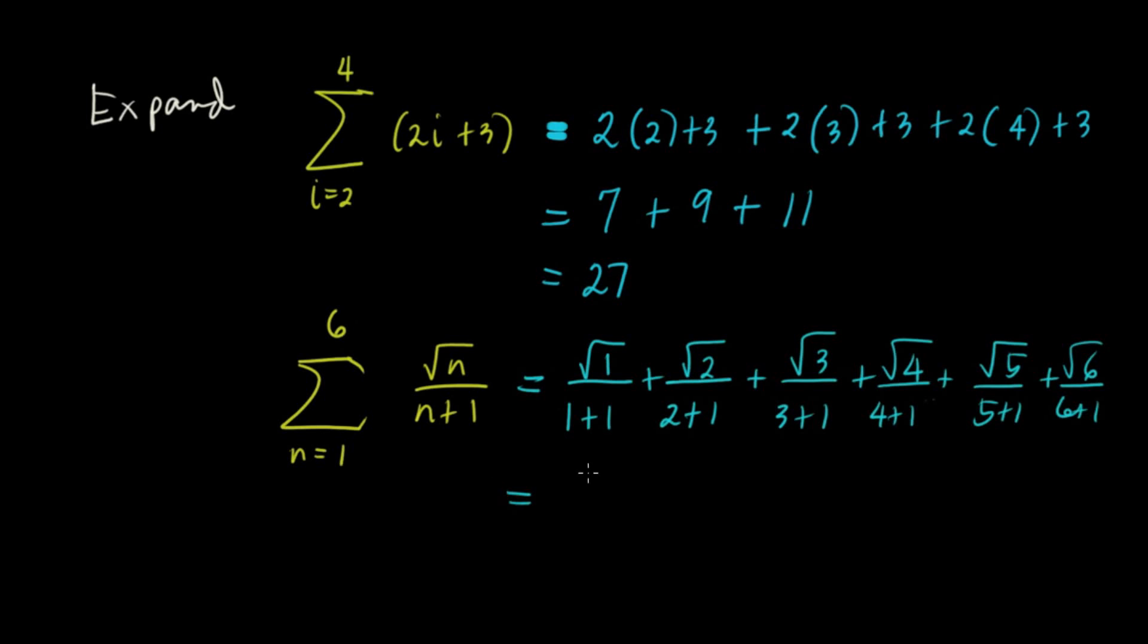If you can further simplify this, like it's 1 over 2, plus square root of 2 over 3, plus square root of 3 over 4, plus square root of 4 over 5, plus square root of 5 over 6, plus square root of 6 over 7. Now, if it's difficult to simplify, I think this is enough.